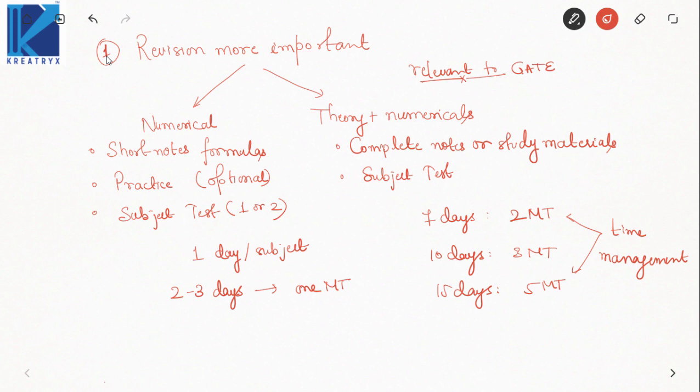To identify what is relevant to GATE, check the last 5 to 10 years of previous questions — just look at which topics have been asked, you don't need to solve them. Then you will know whether a particular portion is relevant. For example, if I am studying numerical methods, I will open that chapter in the previous year book, check from which methods questions have been asked, and then revise only those methods. That way you can specifically revise concepts relevant to GATE.